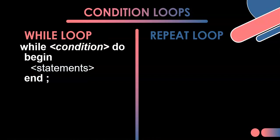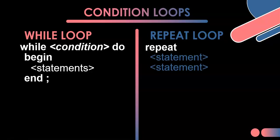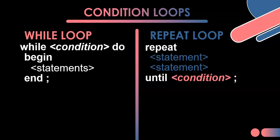For a repeat loop, we start with the word 'repeat,' then a couple of statements — and notice we don't need a 'begin' and 'end' here. Then we have 'until,' and whatever happens between the 'repeat' and the 'until' is the code that is repeated. After the 'until' we have a condition — that's where we check the condition at the end. So we actually don't need a 'begin' and 'end' in this case.